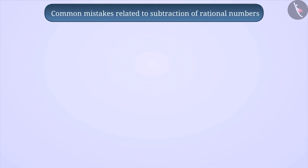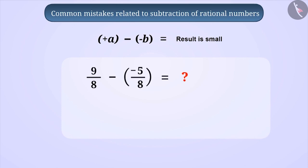If children are asked to subtract a negative rational number from a positive rational number, will the result be larger or smaller than both numbers? Often children answer that the result will be smaller. Their misconception behind this answer is that smaller numbers are always obtained by subtraction. Like our question is to find the result of 9 by 8 minus minus 5 by 8.